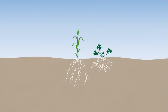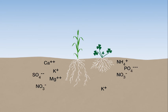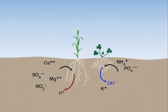Plant roots take up nutrients as either cations, which are positively charged, or as anions, which are negatively charged. When cations are taken up by plant roots, positively charged hydrogen ions are excreted into the soil to maintain electrical balance. When anions are taken up, hydroxide is excreted into the soil. In general, plants absorb more cations than anions.